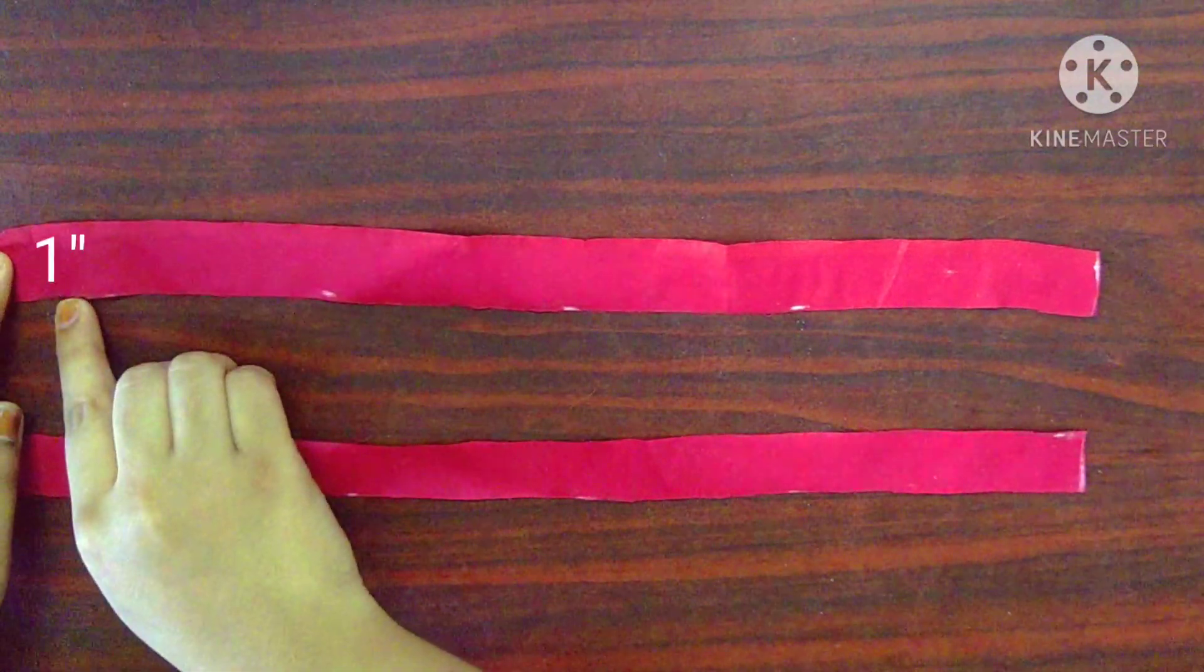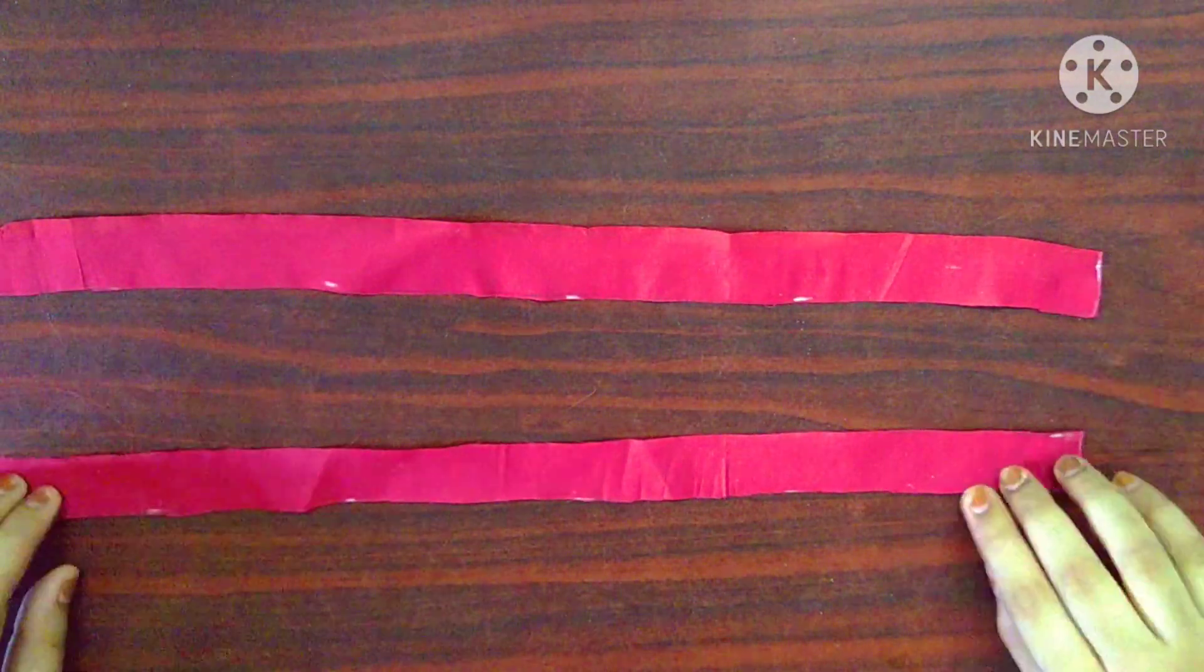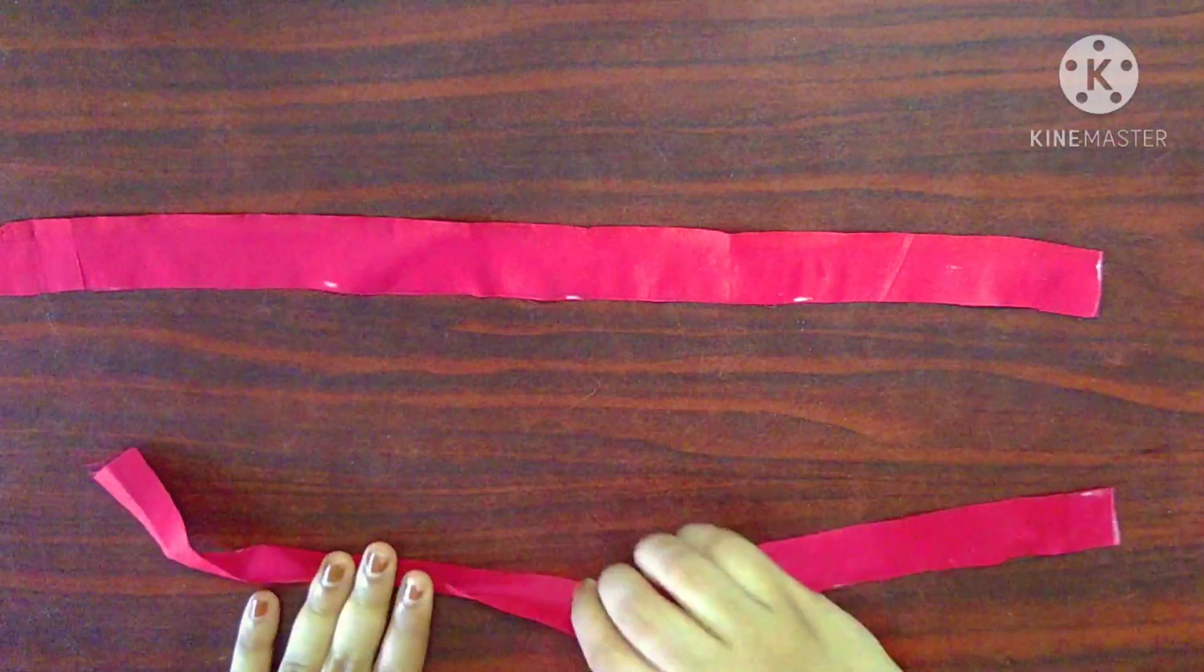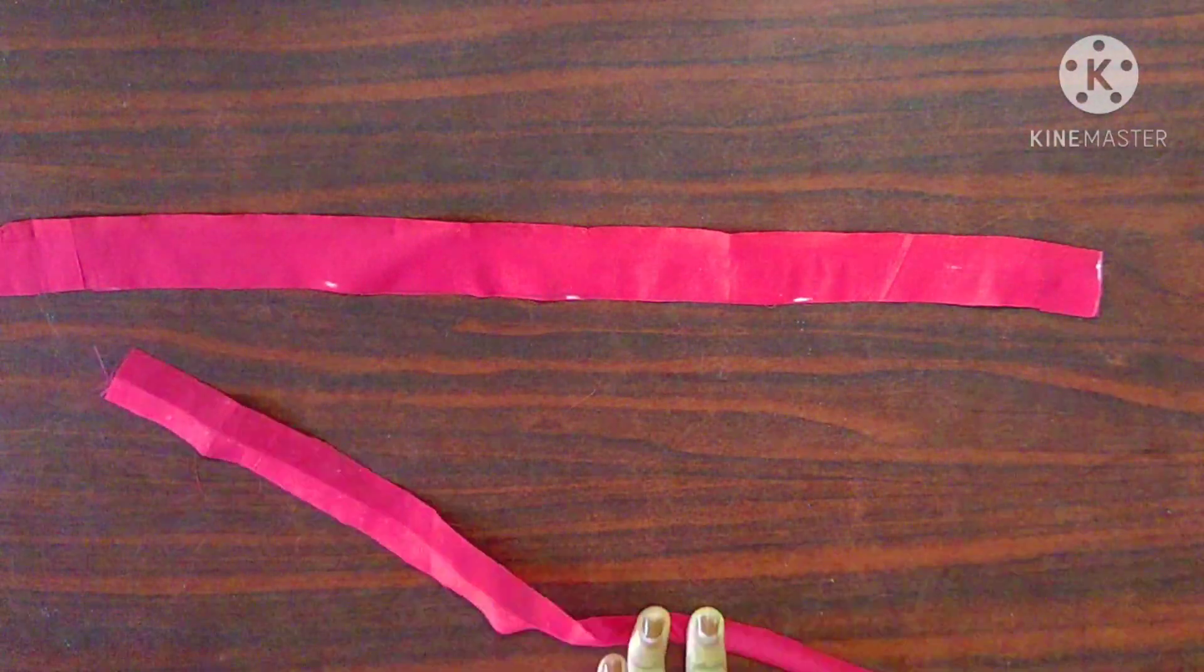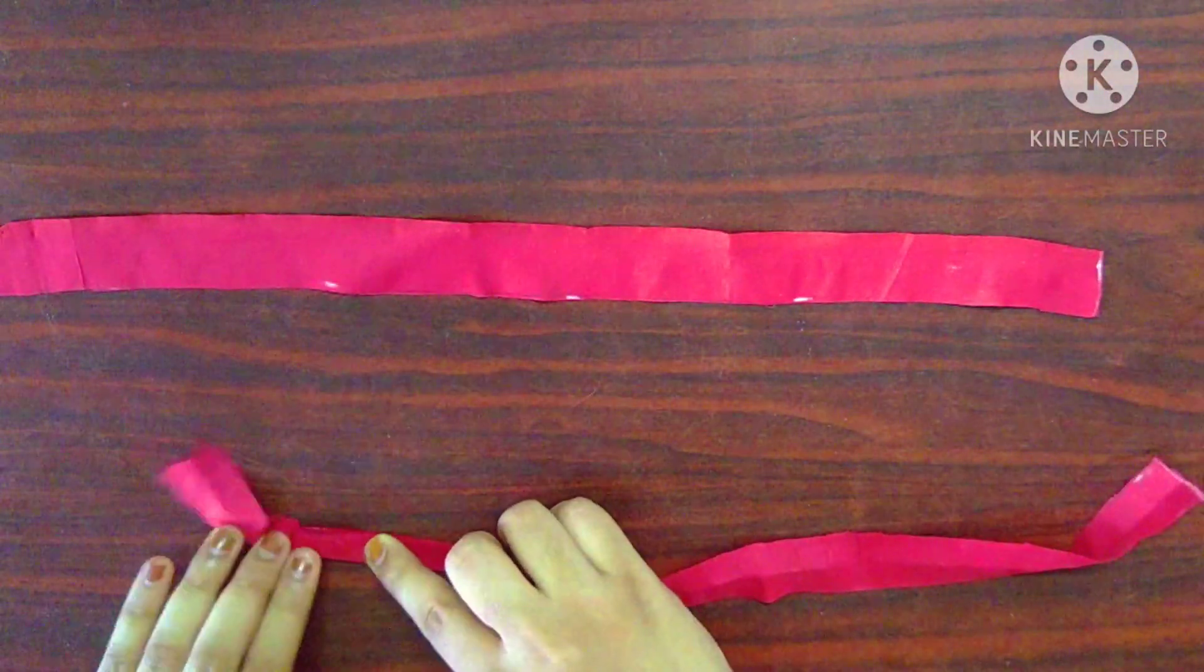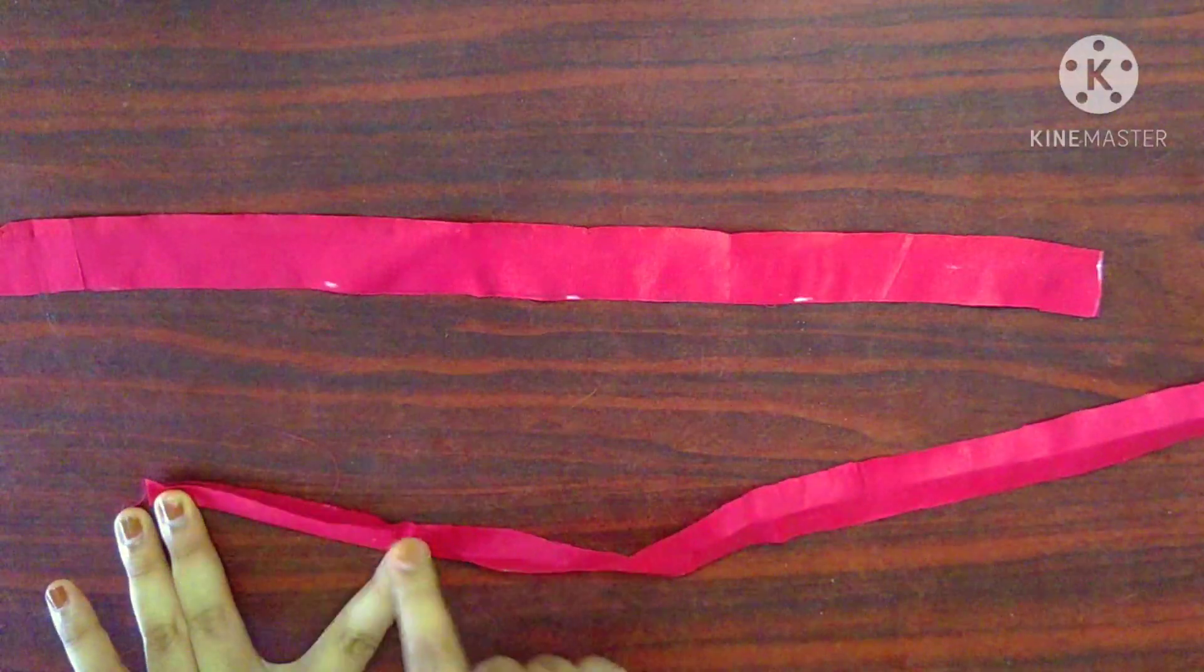To make the strings, I have taken two strips whose width is 1 inch and length is 18 inches. I am going to fold the strip in half with its right sides facing each other and give a straight stitch.